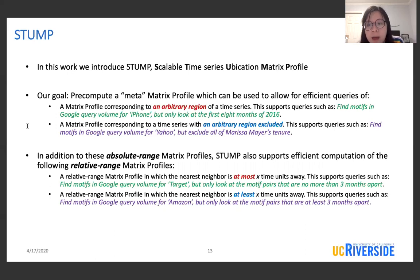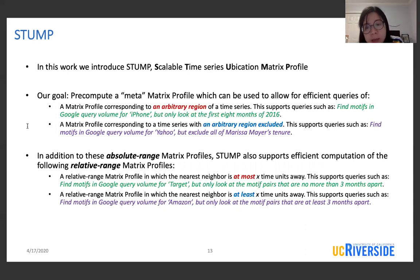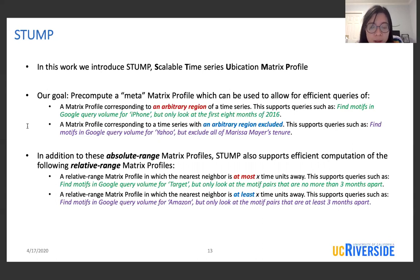Our goal is to precompute a meta matrix profile, which can be used later to allow for efficient queries of the following types. First is the matrix profile corresponding to an arbitrary region of a time series. Second is a matrix profile corresponding to a time series with an arbitrary region excluded. In addition, STMP also supports efficient computation of relative range matrix profiles. That means we can place constraints on the nearest neighbor location for every subsequence, so that the nearest neighbor is at most or at least x units away from the subsequence.